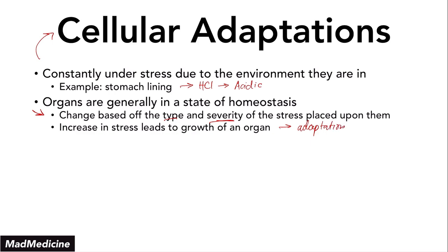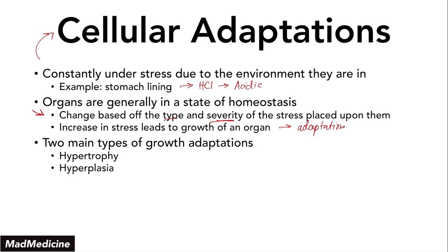An increase in stress is going to lead to the growth of an organ, because this is essentially the adaptation our body has developed. We are able to adapt by growing our organ to better accommodate for that stress. There are two main types of growth adaptations, and those are hypertrophy and hyperplasia, both of which are very high yield for your examination, so you should definitely know them very well.